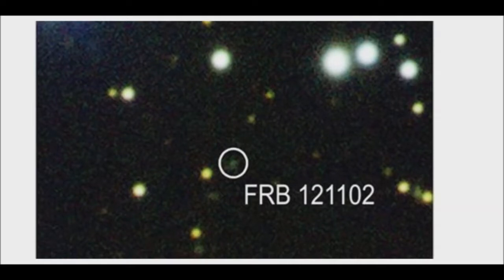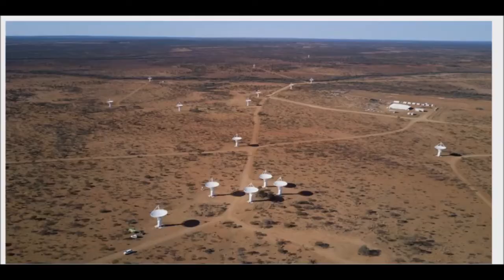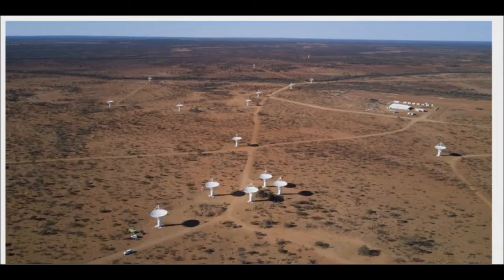A long time ago in a galaxy far, far away, something mysterious launched a burst of radio waves into the cosmos. Last September, that powerful pulse collided with an array of radio telescopes in the Western Australian outback. Though the fleeting barrage lasted mere milliseconds, scientists were able to trace the radio burst back to its source.